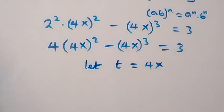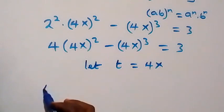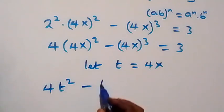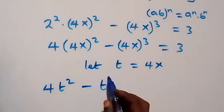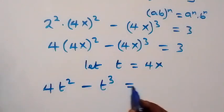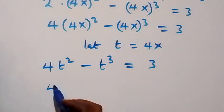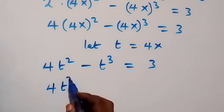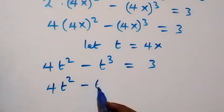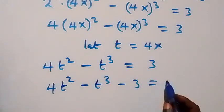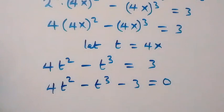With the substitution t = 4x, we can write the equation as 4t squared minus t cubed equals 3. Taking 3 to the left side, we get 4t squared minus t cubed minus 3 equals 0.